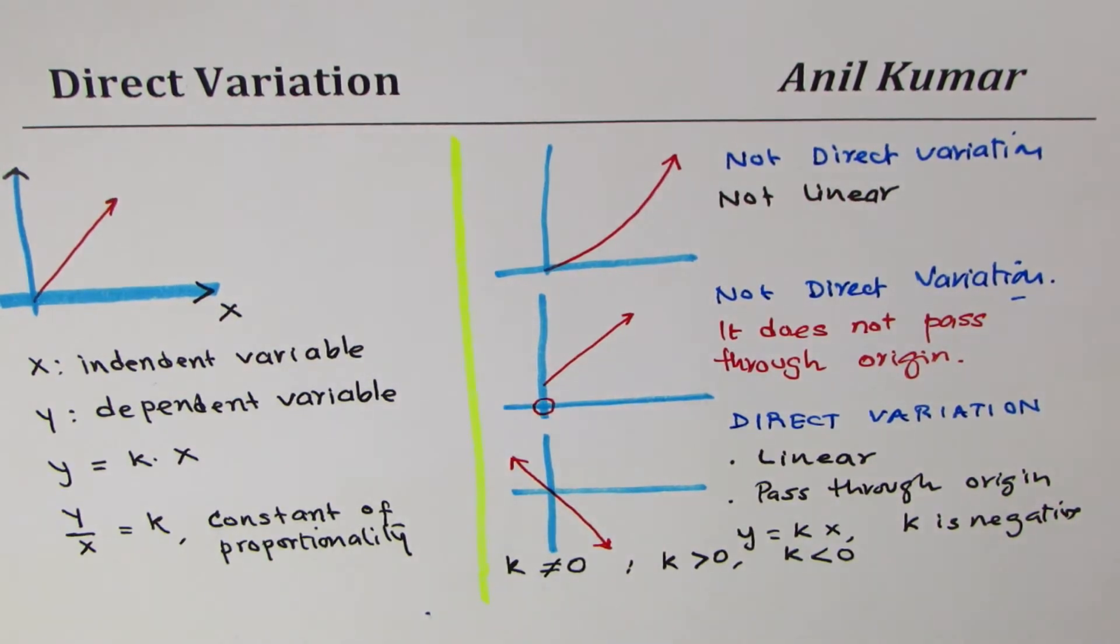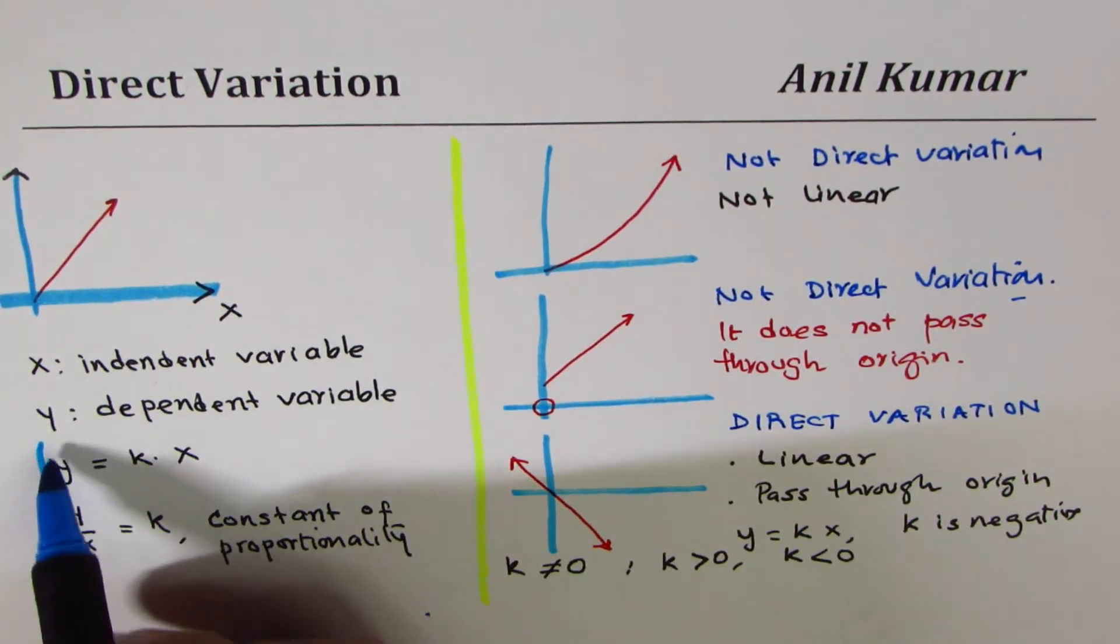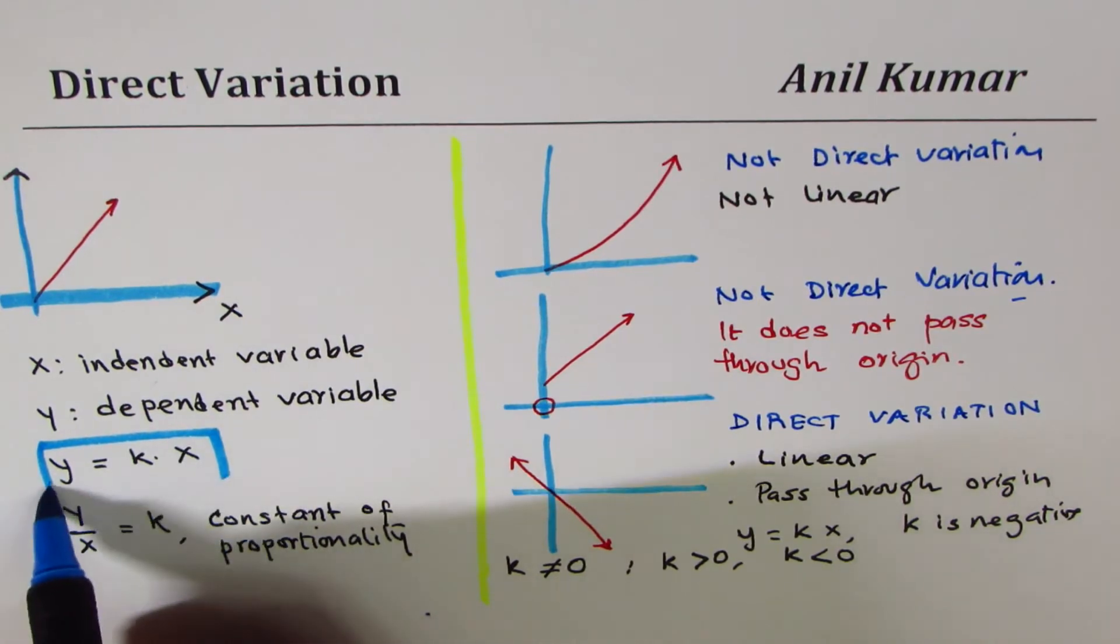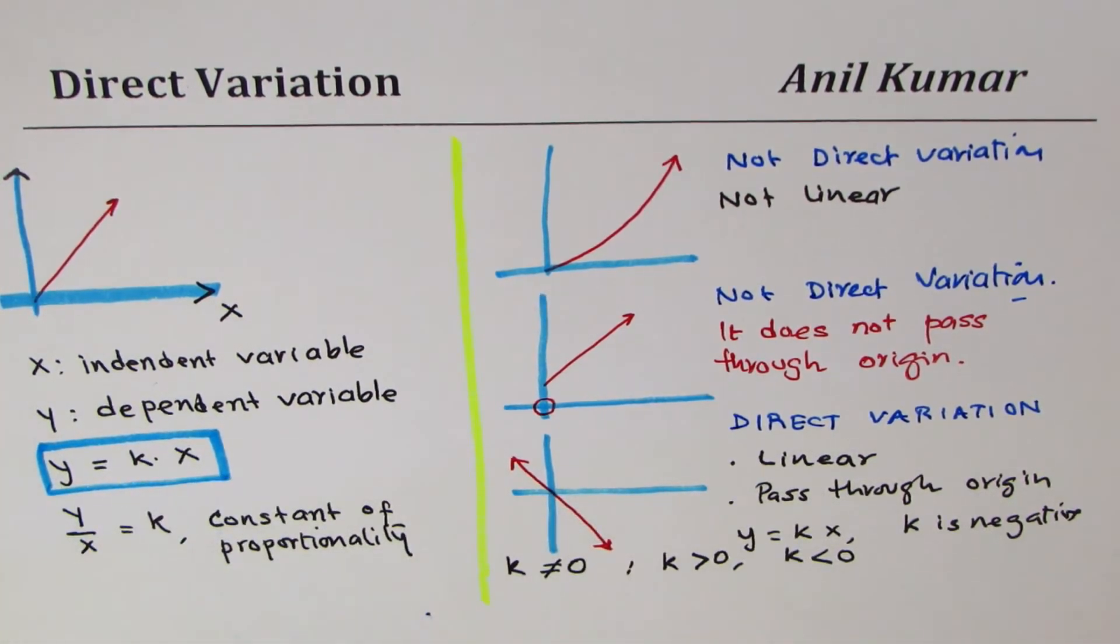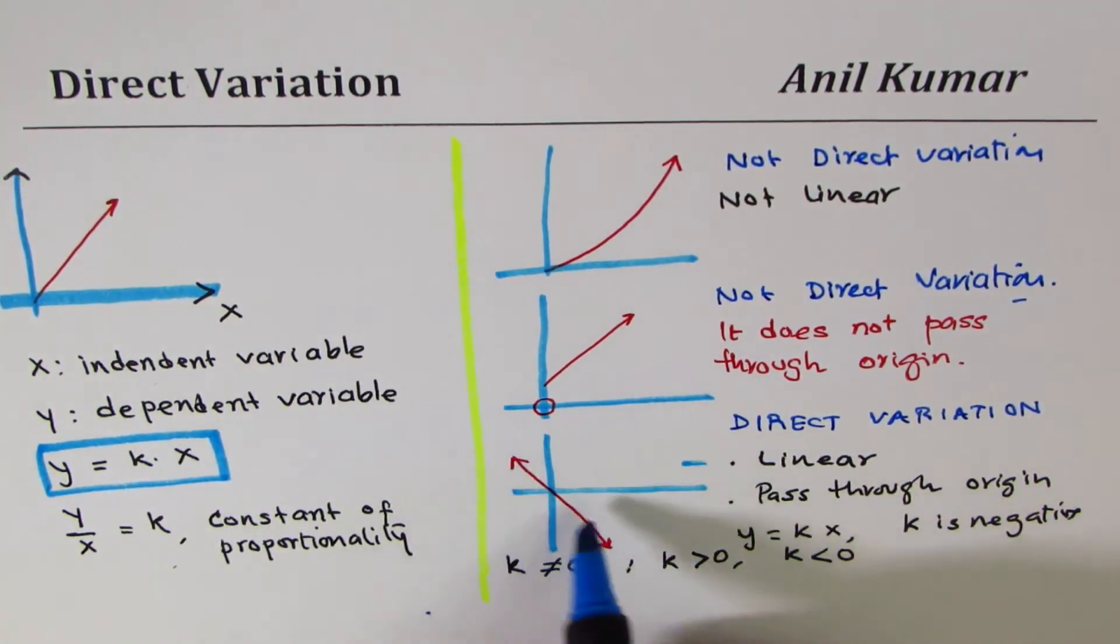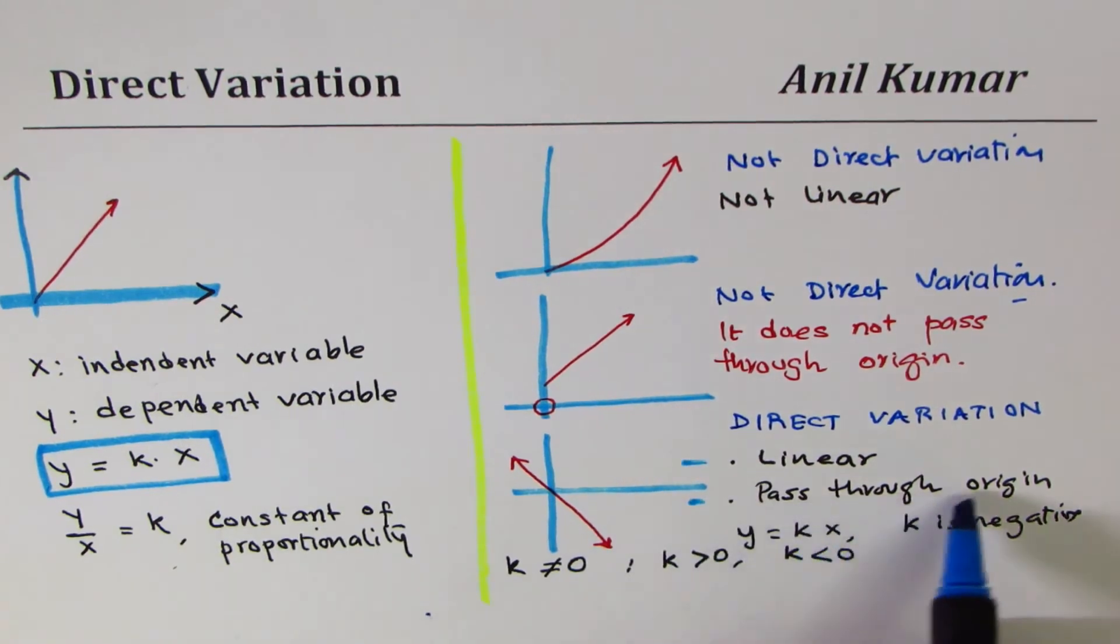One way is from the equation itself, equation type y equals kx where k is not equal to zero, it could be positive or negative. And second is that it should be from the graph, linear and pass through origin.